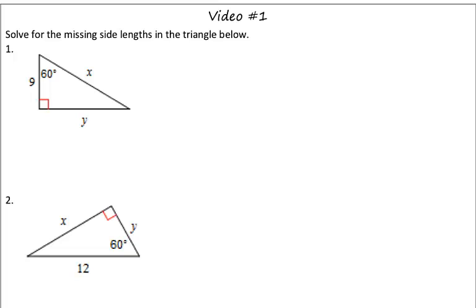Taking a look at number 1, we are given that this short leg has a length of 9 units. To solve for our missing side lengths, we're missing the hypotenuse and the longer leg. Well, from our notes, we know that the hypotenuse and the shorter leg have a 2 to 1 ratio.